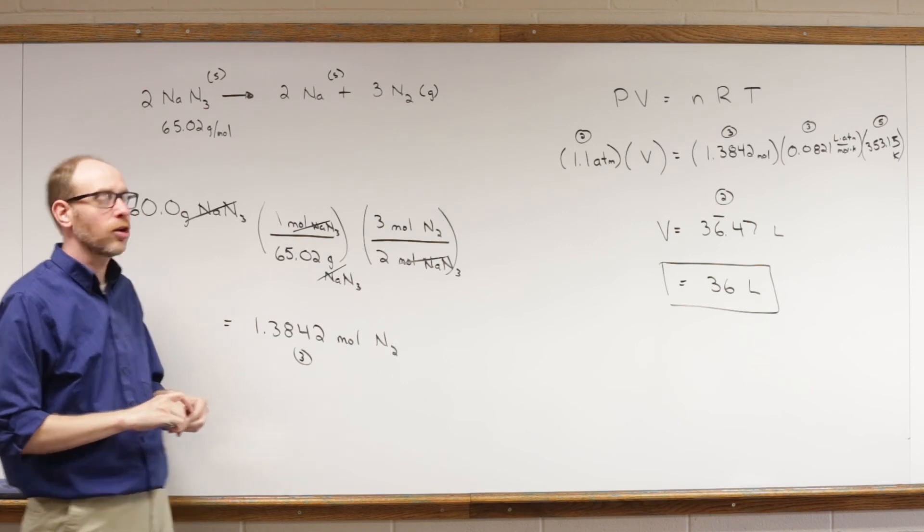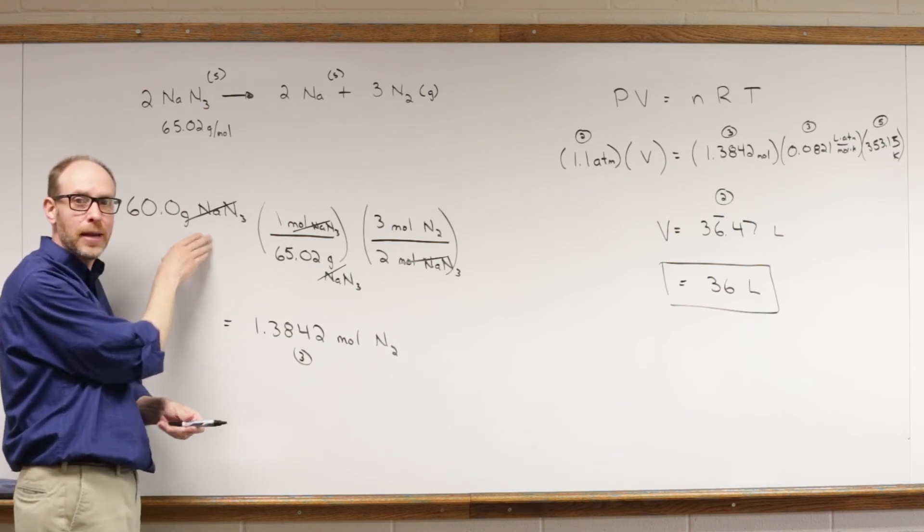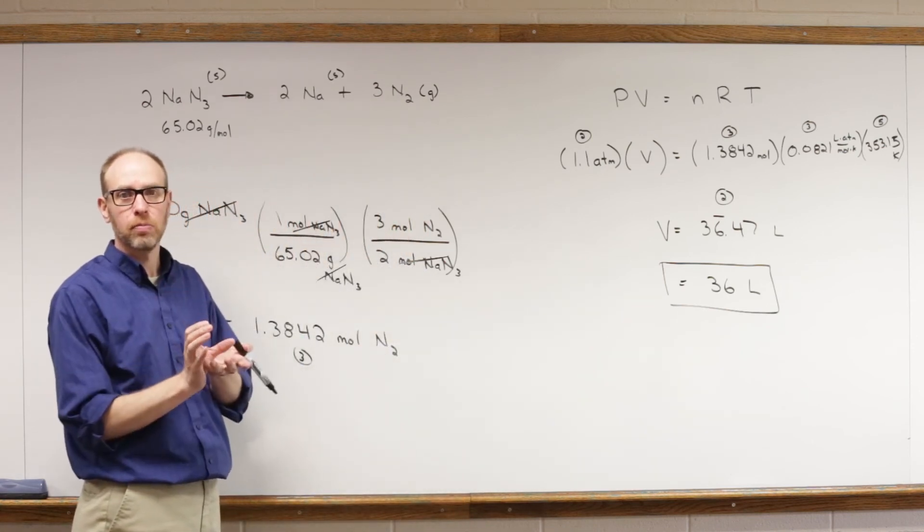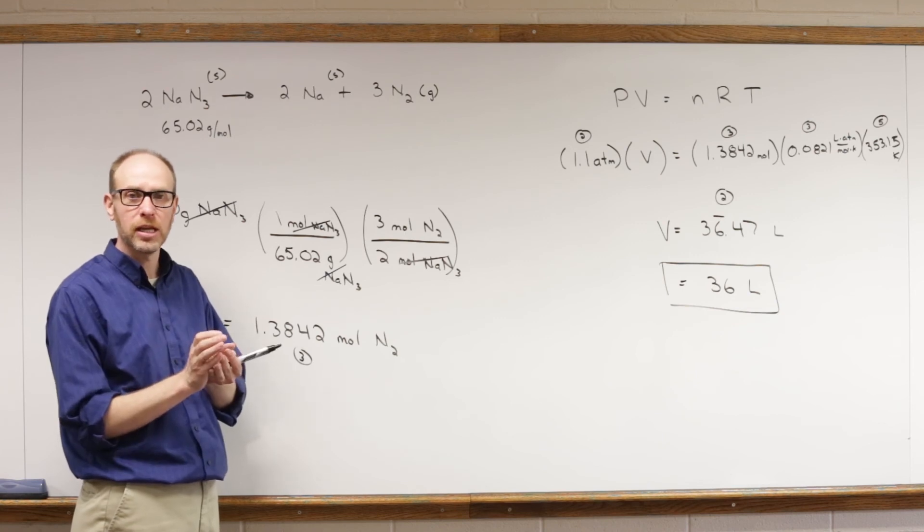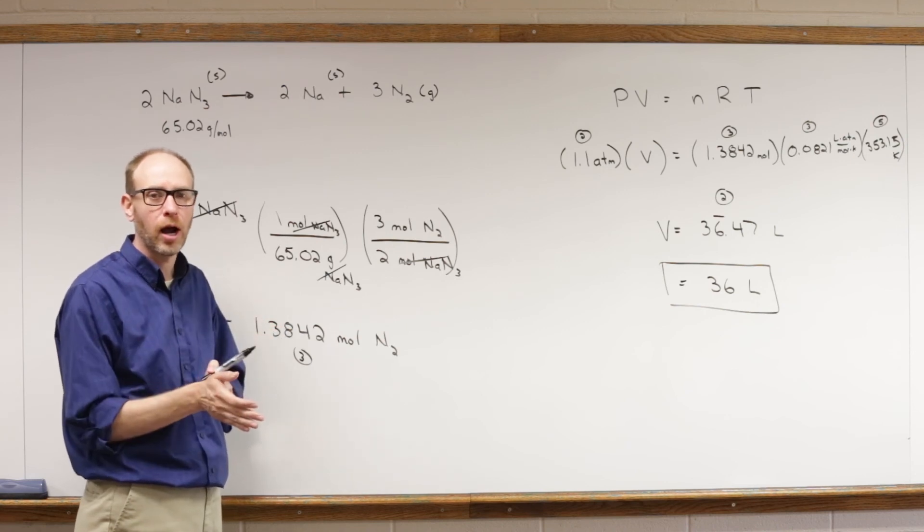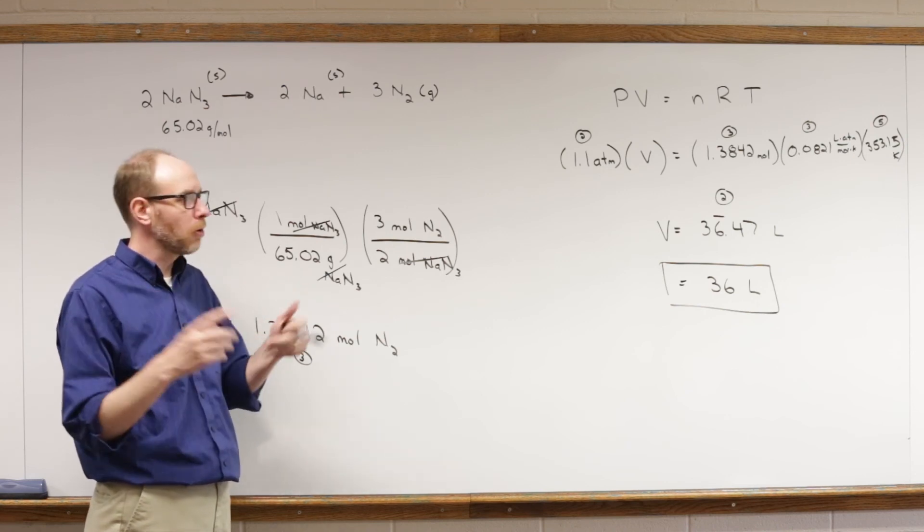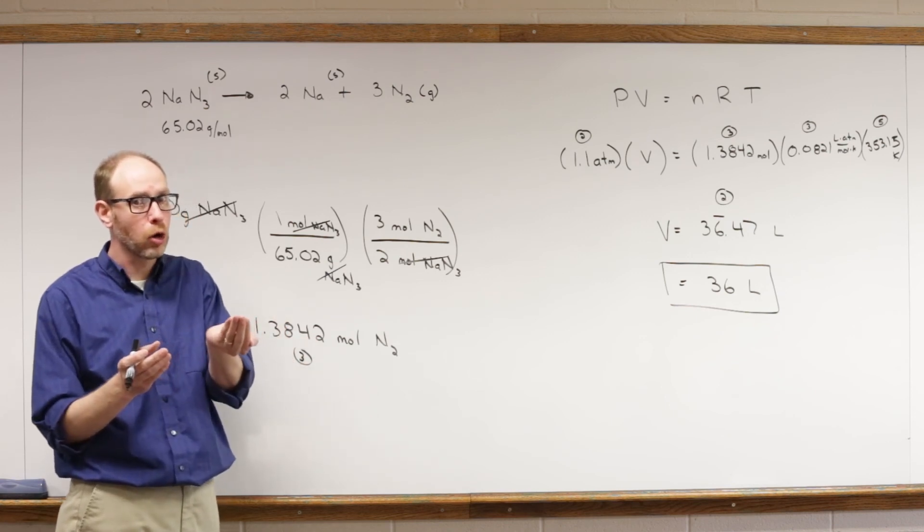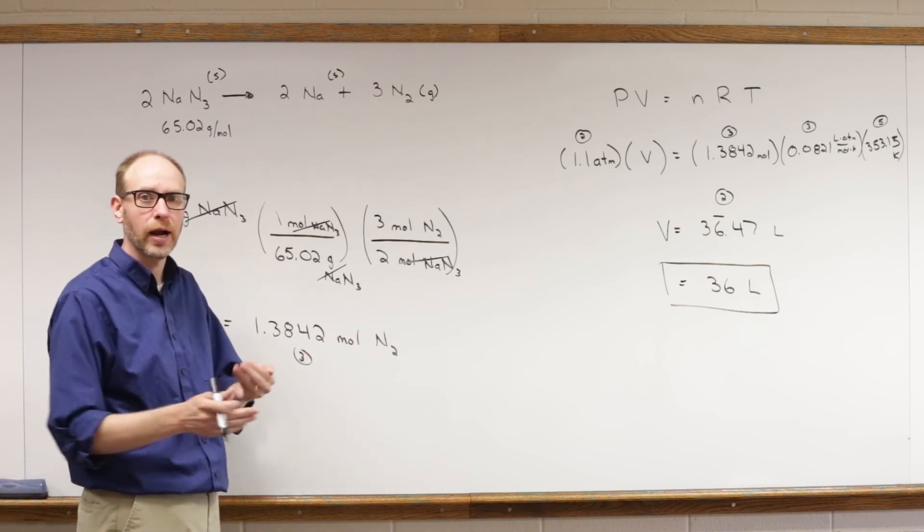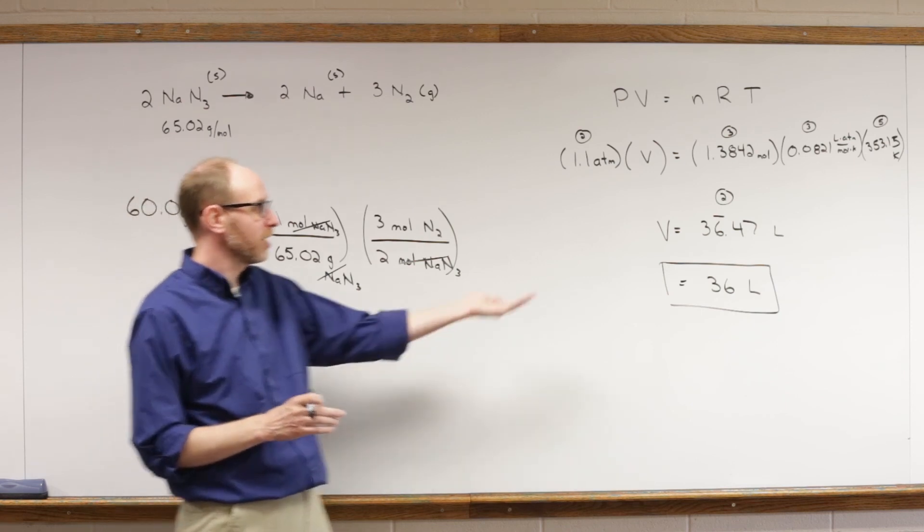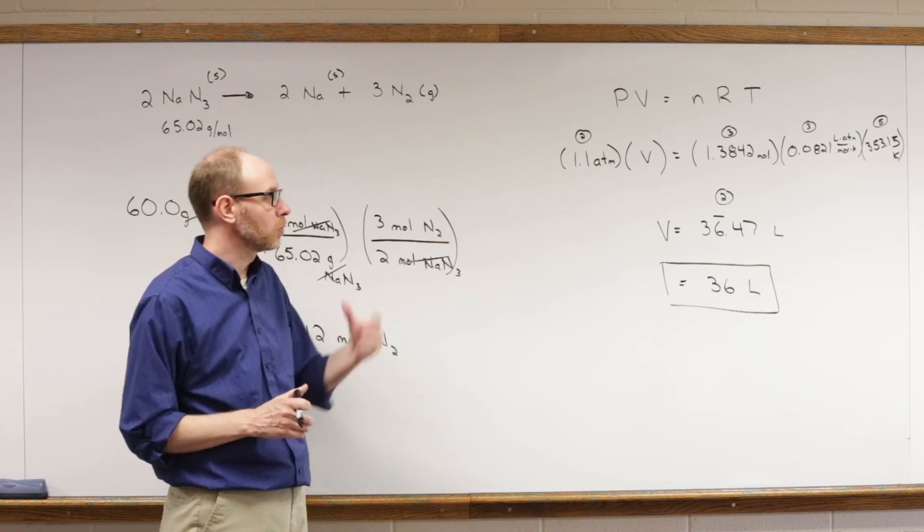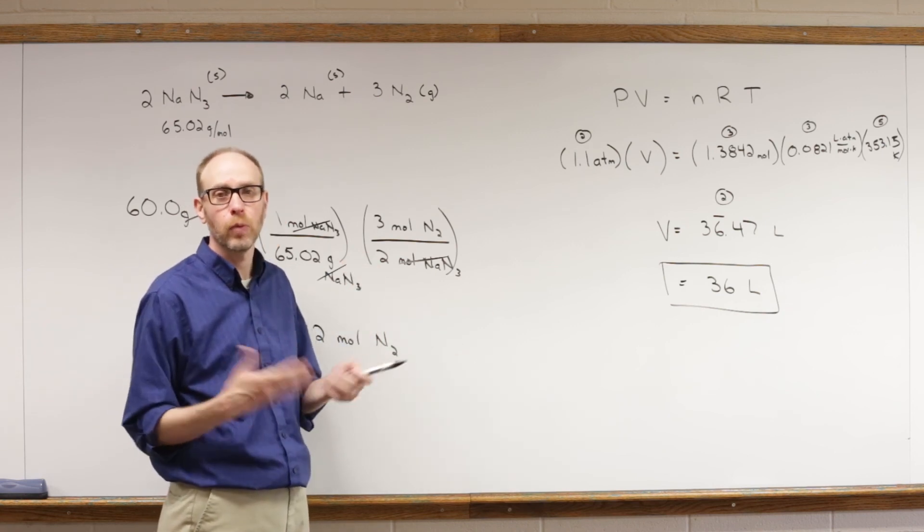That's a significant volume. A relatively small amount of sodium azide will produce a fairly large volume, which is why you might use that in an airbag. You put this small little canister there. Whenever that material decomposes, that sodium azide decomposes upon impact of your car with some other object, and 60 grams we could probably hold that in our hand—although sodium azide is pretty nasty, poisonous stuff, so we probably wouldn't want to hold it in our hand. But 36 liters, that's a significant volume, enough to fill up an airbag, which would then cushion you or save you, possibly, whenever you were in an accident.